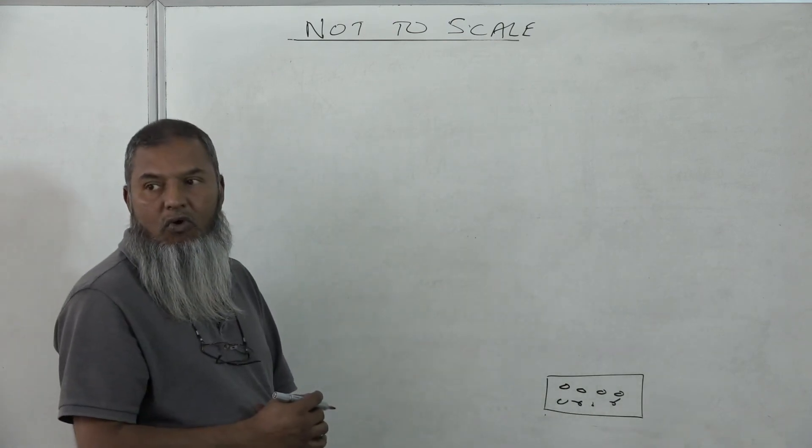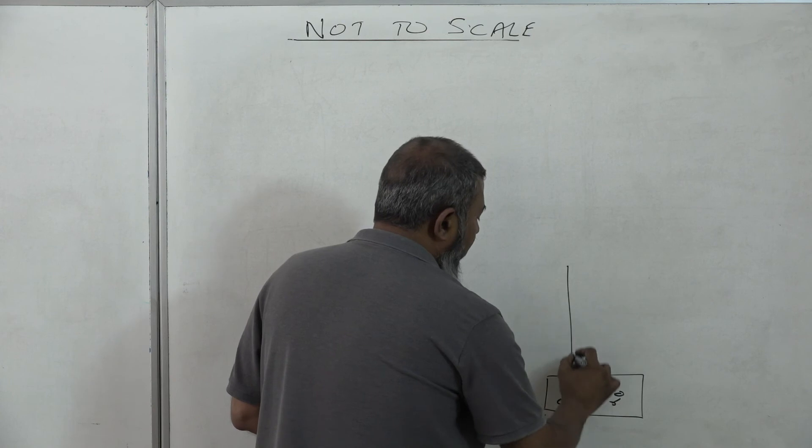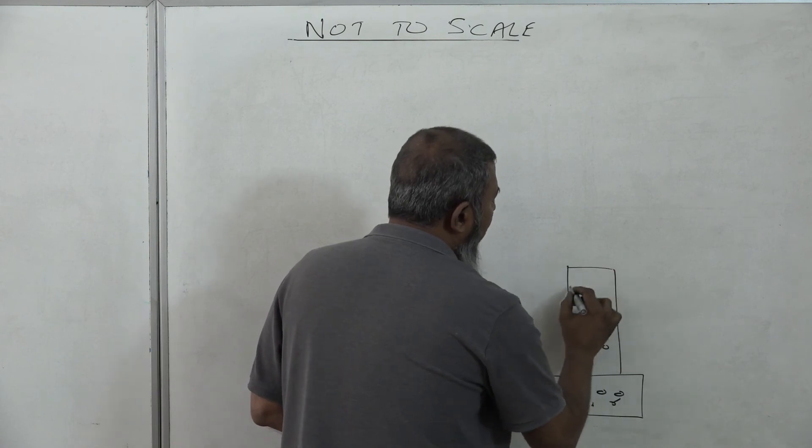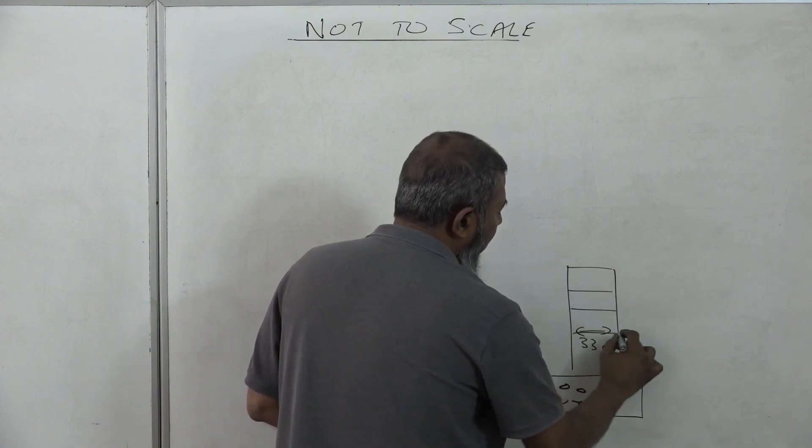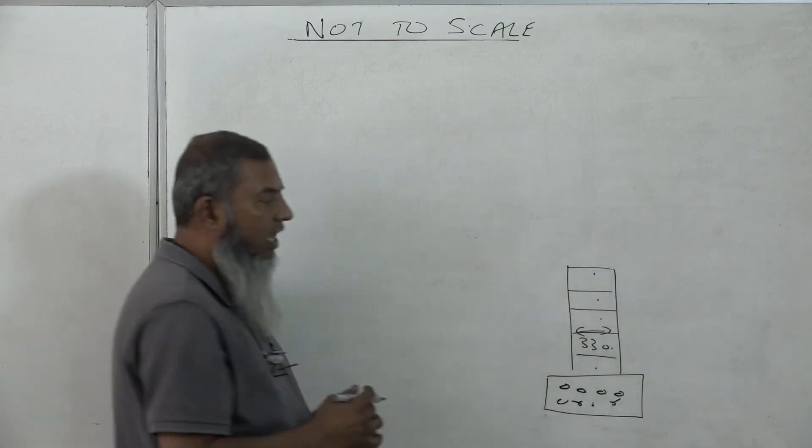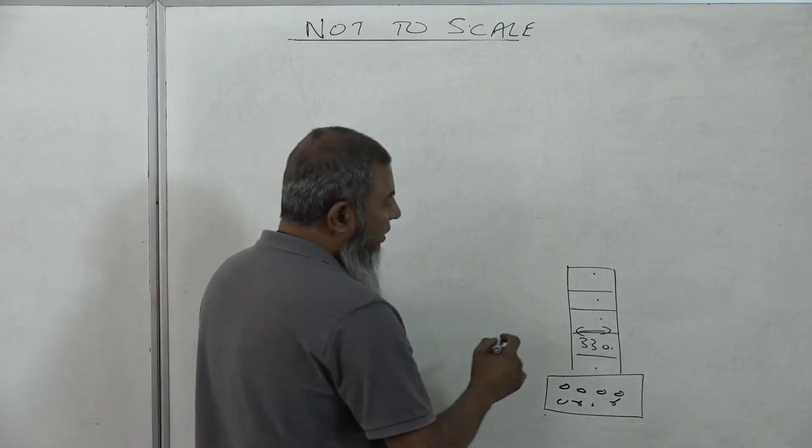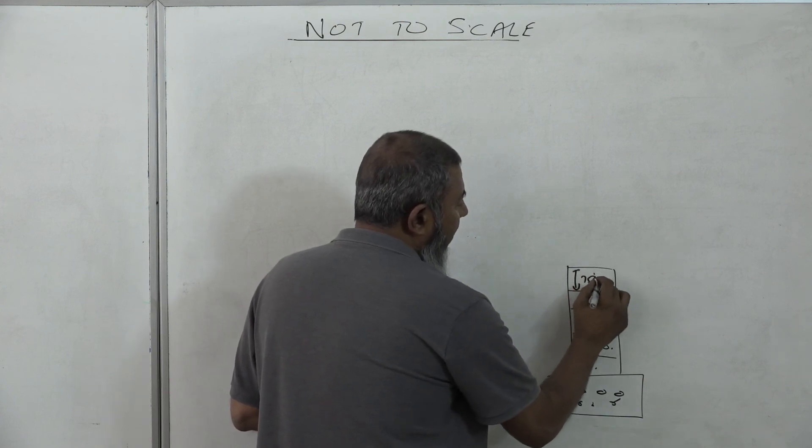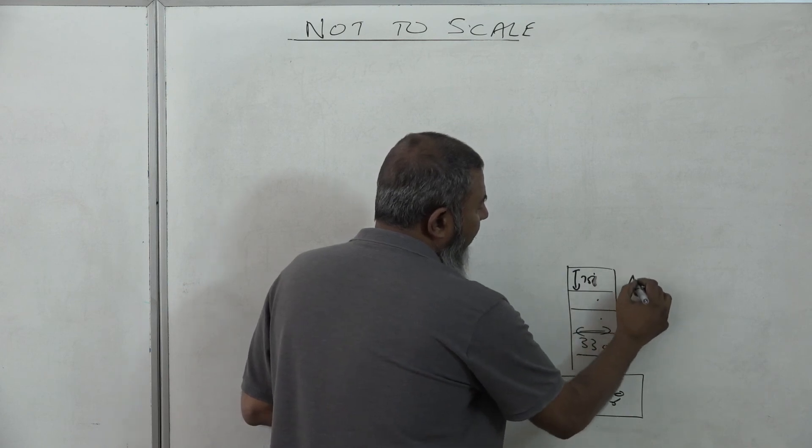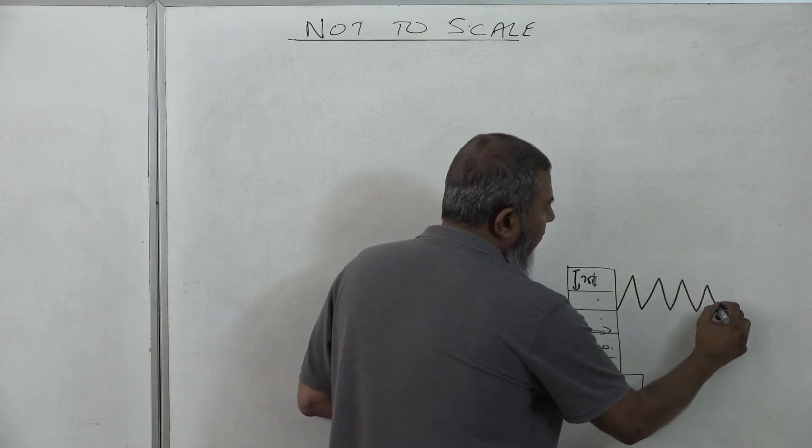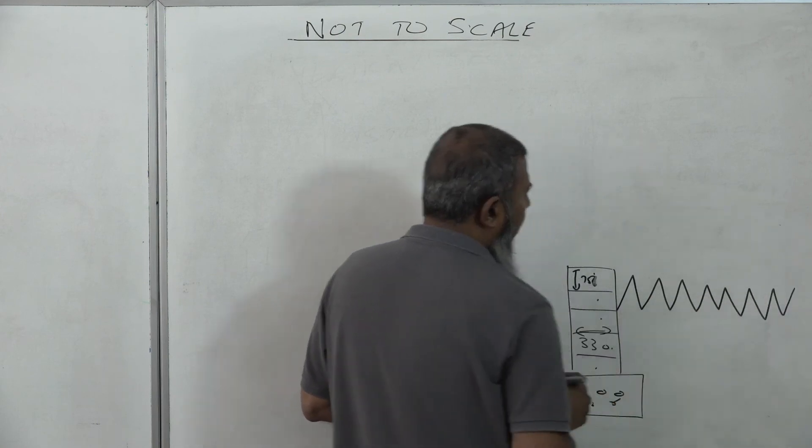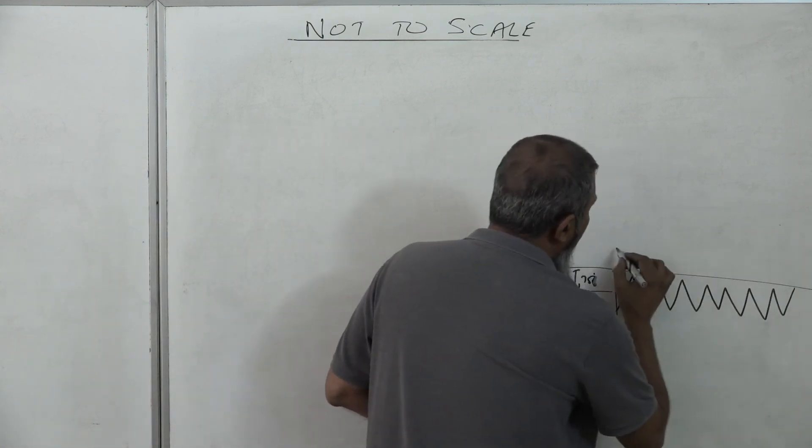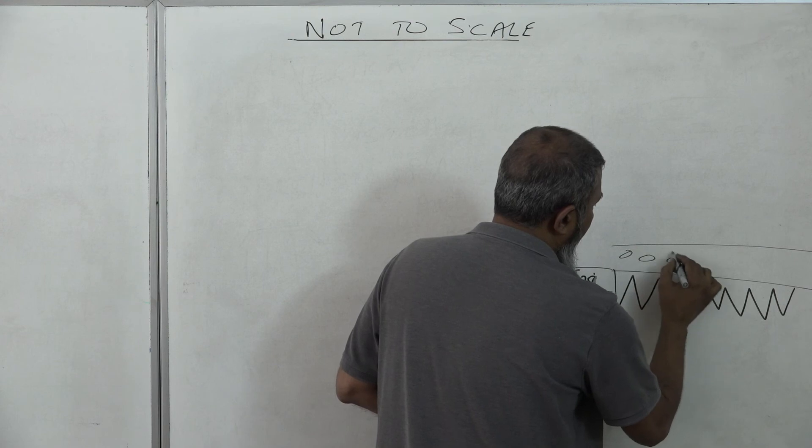We have the foundation wall, which is 330. So my foundation wall is 330. Remember we said 5 courses high: 1, 2, 3, 4, 5 courses high. That's there. We have a hard core of 150. And we know that the brick course is 75 millimeters. So 75, 75 is 150. So that's my hard core. Then we've got our concrete slab of 150 millimeters.